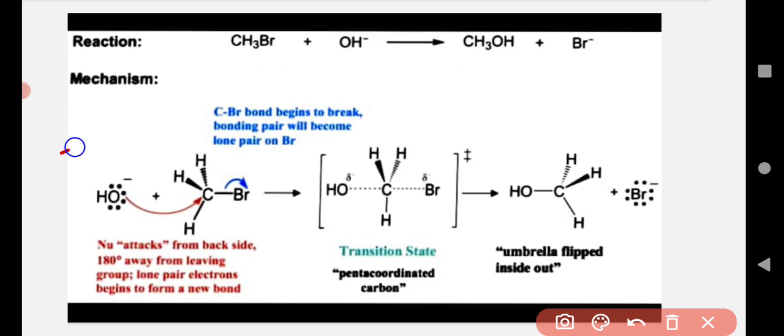in this second-order nucleophilic substitution reaction, the nucleophile always attacks from the backside. The nucleophile attacks from the backside because the size of hydrogen is smaller than the OH functional group, and Br is larger in comparison to OH minus. That's why only backside attack takes place.